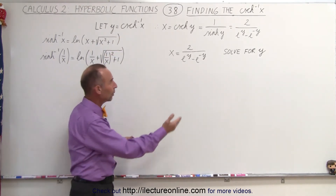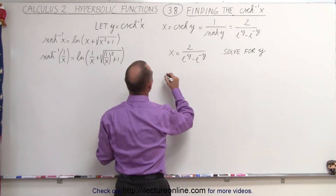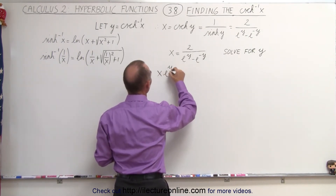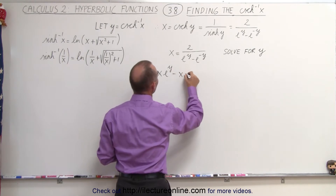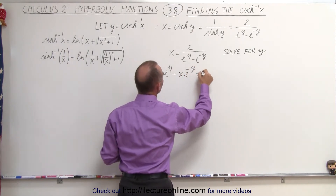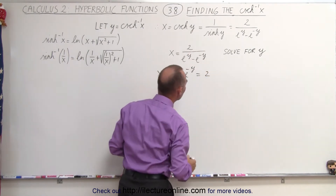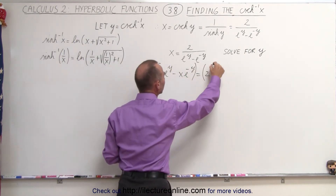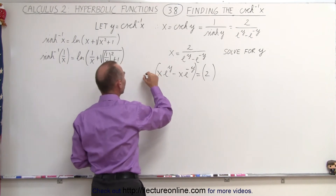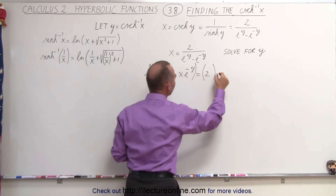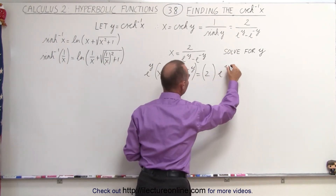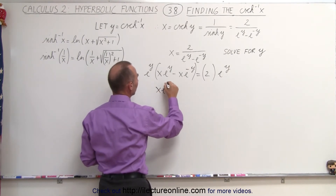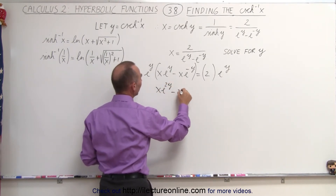Let's go ahead and cross-multiply. This becomes x times e to the y minus x times e to the minus y equals 2. And you're probably going to see the pattern here — we're going to multiply both sides of the equation by e to the y. When we do that, the left side becomes x e to the 2y minus x.